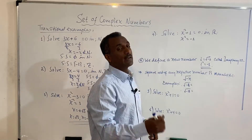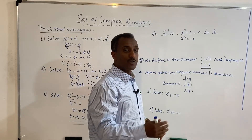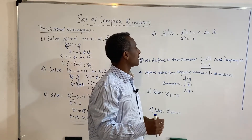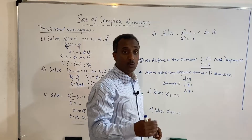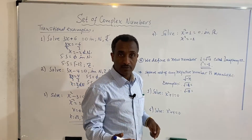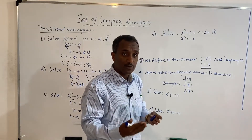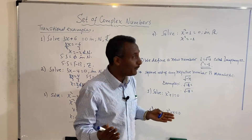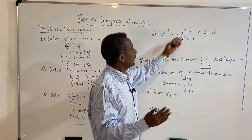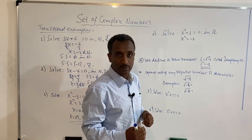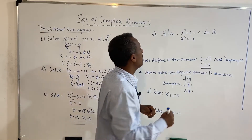In a real number system, there is no number that gives us negative one when we square it. When we square any number, we cannot get negative one — this equation appears to have no solution in the real numbers.